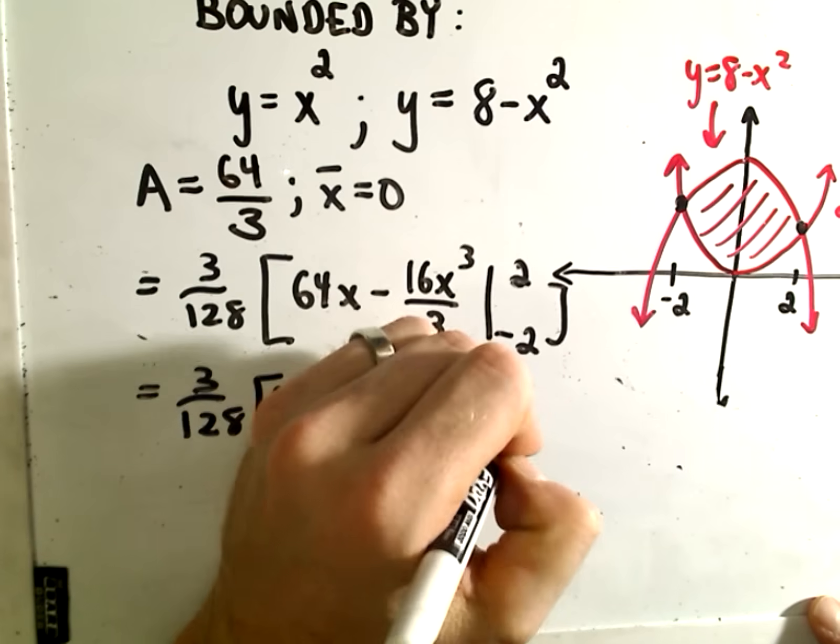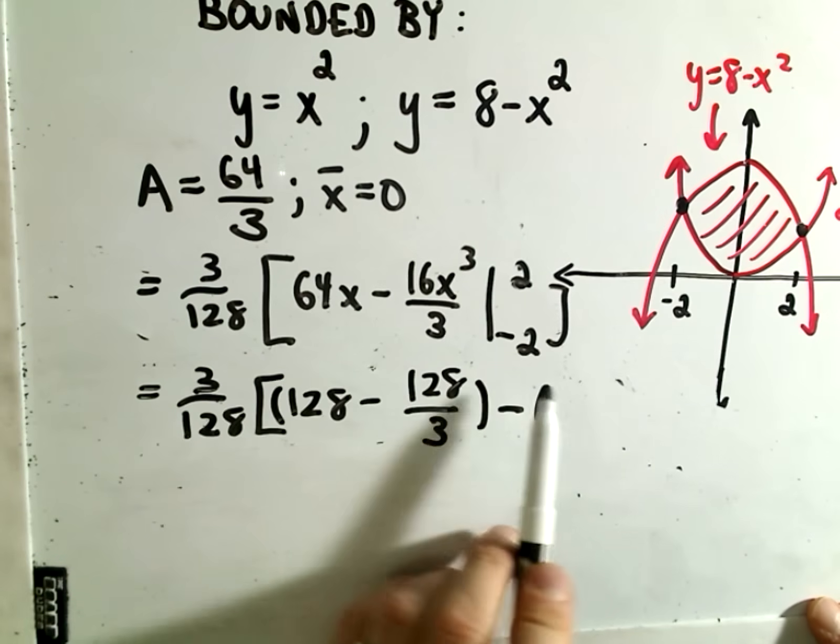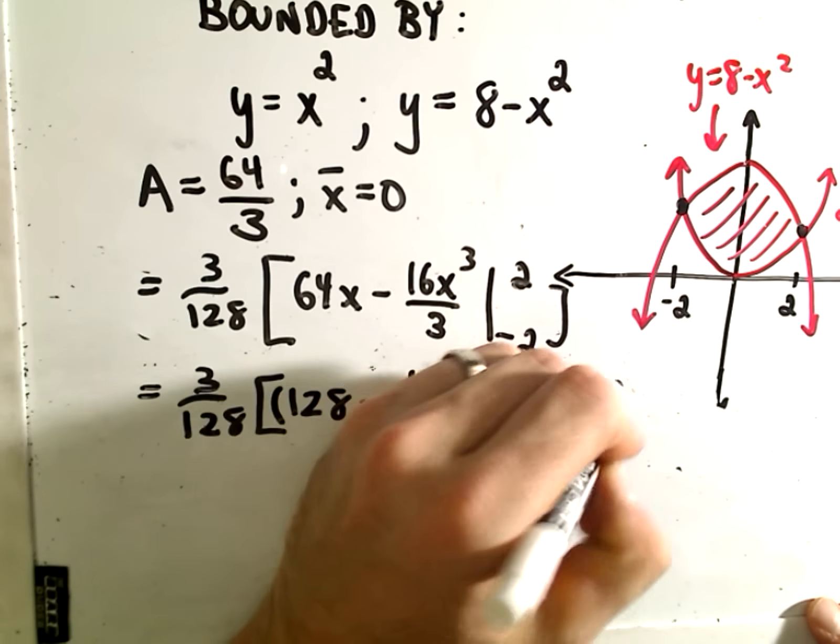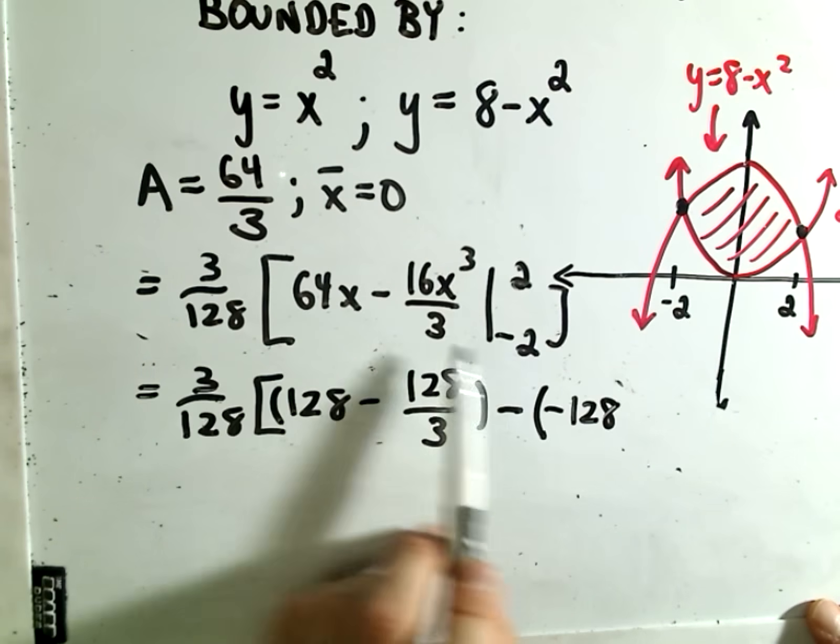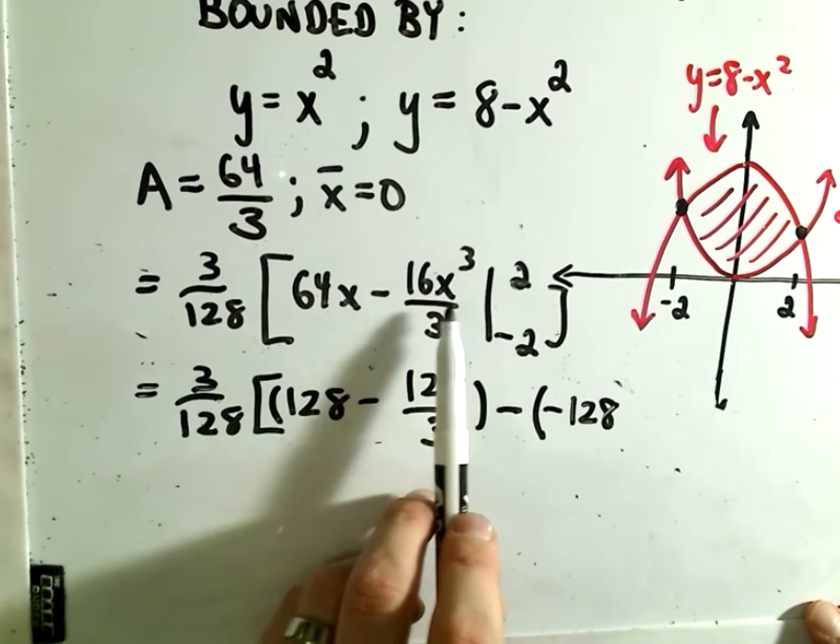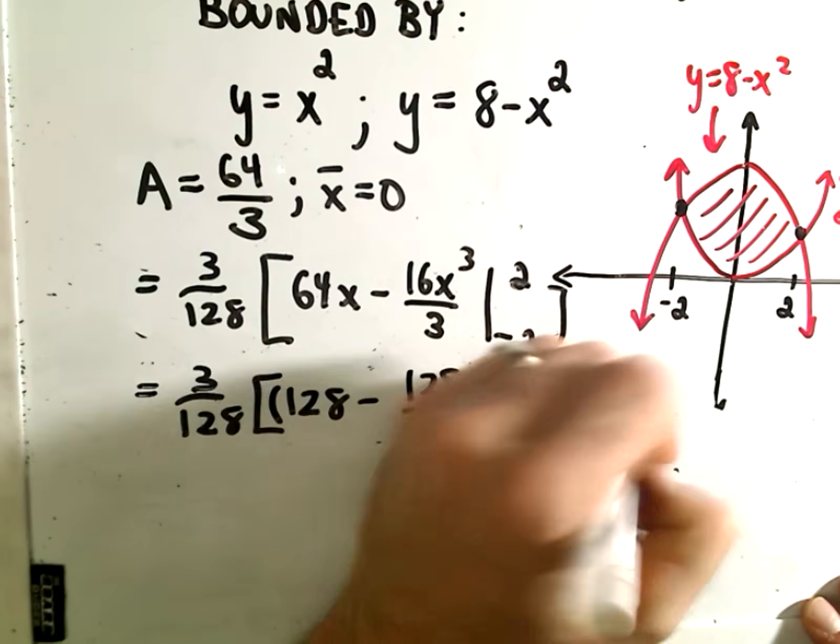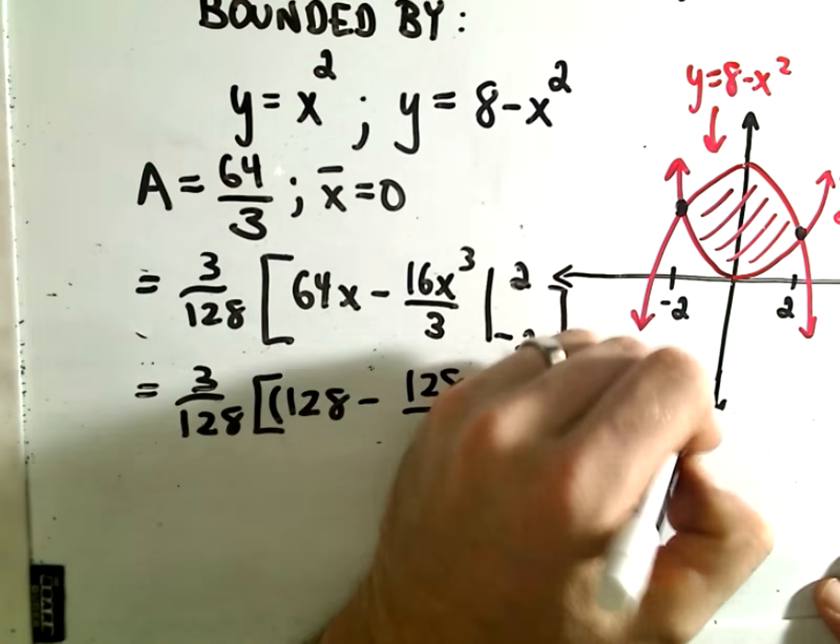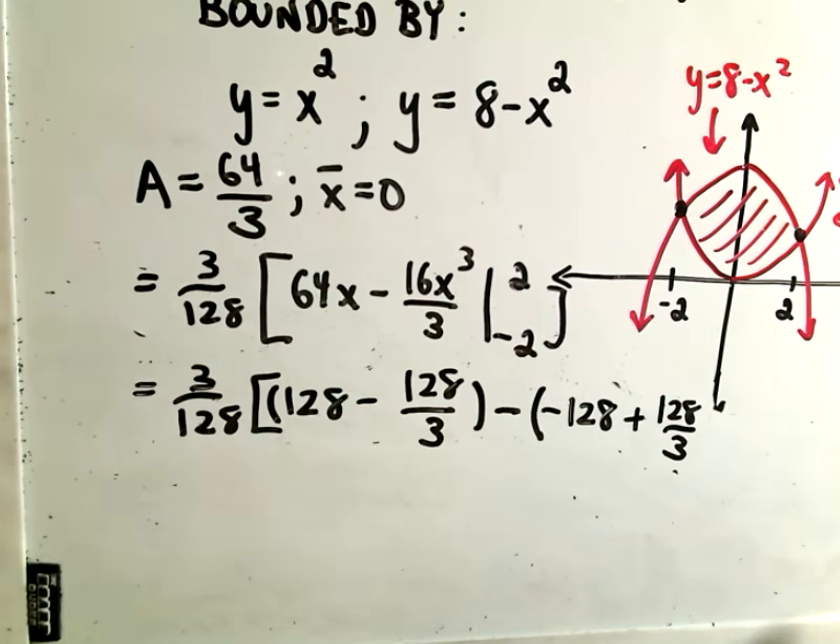Then we have to plug in our lower limits of integration. If I plug in -2, I'm going to get -128. If I cube it, we'll just get the opposite sign, which should be positive 128/3.